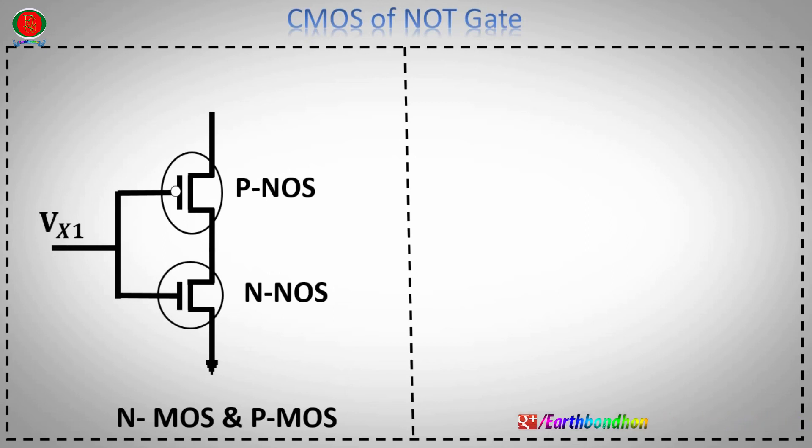Vx1 is the input terminal of the NOT gate. VDD is the power supply. Transistor output is the NOT gate output.